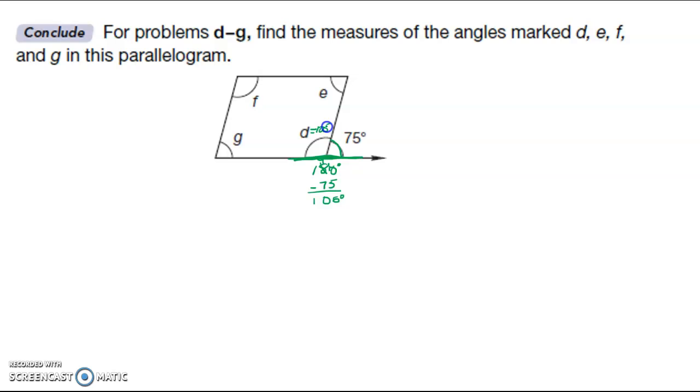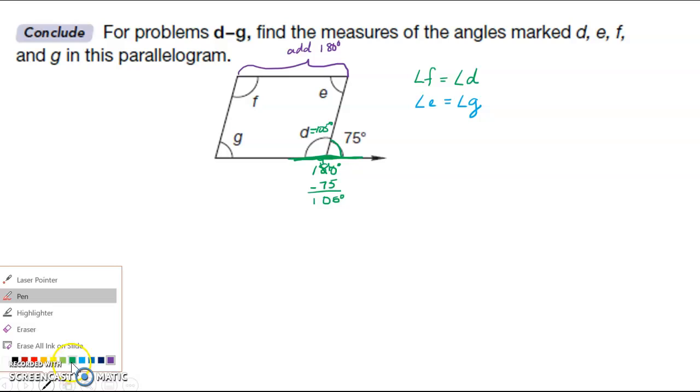Now what I know about parallelograms is the opposite angles are the same, so angle F is equal to angle D, and let me change colors here. Angle E is equal to angle G. I also know that angles that are close to one another, like F and E, add up to 180. There's lots of magical things about the parallelogram. So if this is 105, then this is also 105.